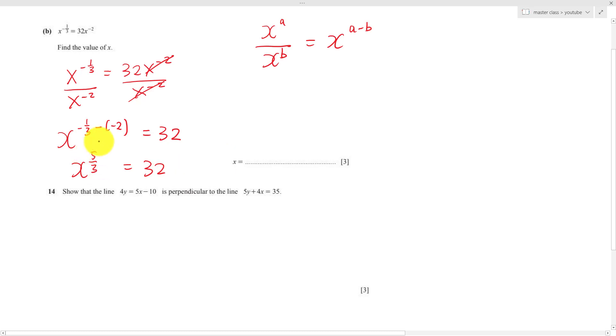If I want to get rid of the power of 5 over 3 here, I will multiply the power of 3 over 5 on both sides. This simplifies to x power of 1. Then you can type in the calculator. The calculator should tell you x equals to 8.